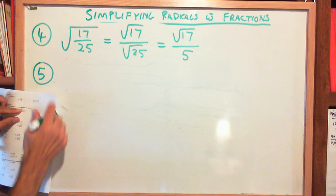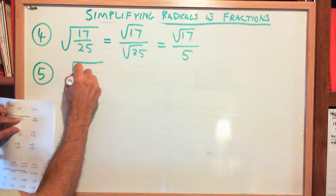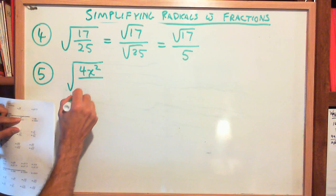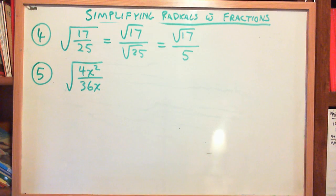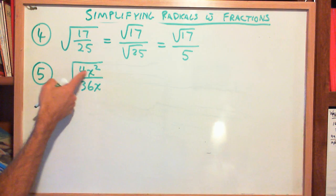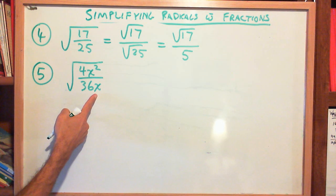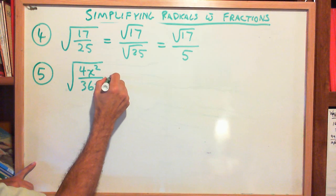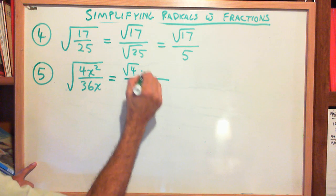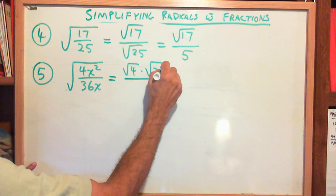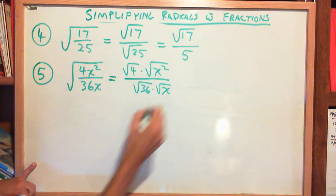Example 5: the square root of 4x squared over 36x — similar to a problem that was on the test. Is 4 a perfect square? Yes. Is x squared a perfect square? Yes. Is x a perfect square? No. So I separate things. On the top: square root of 4 times the square root of x squared. On the bottom: square root of 36 times the square root of x.